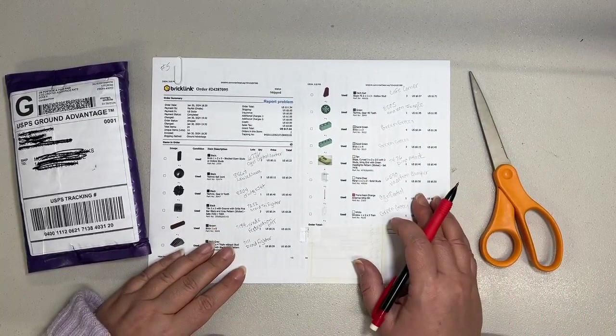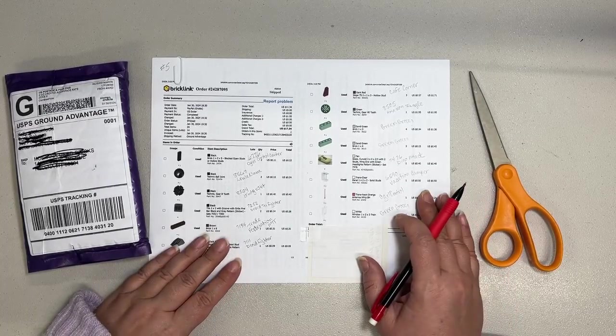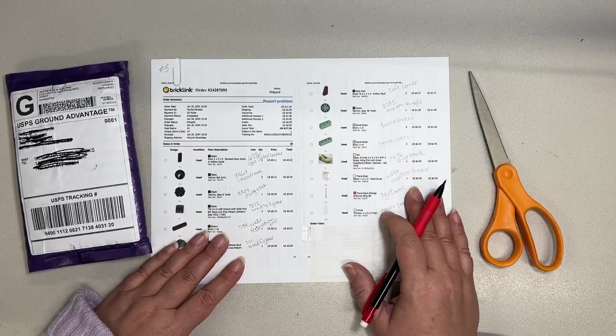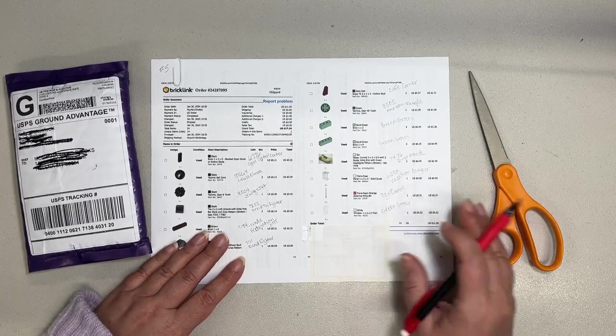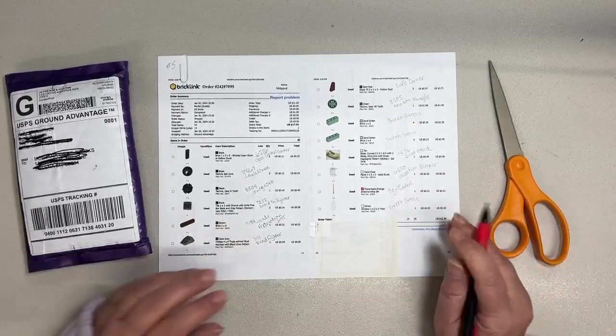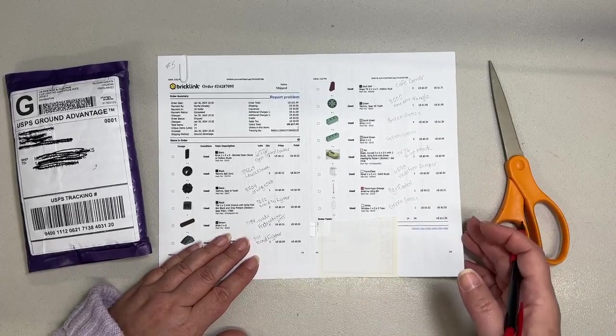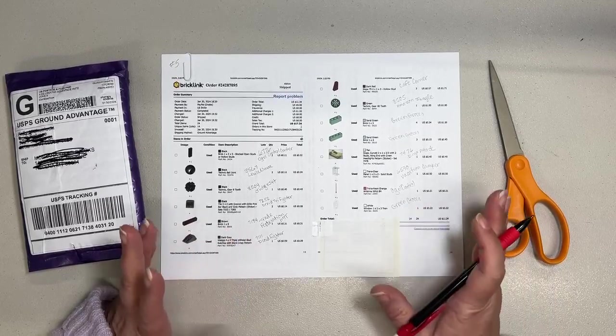Just more parts for some of the sets that I'm trying to get sold on eBay, and of course a couple for the two sets I'm constantly buying parts for. So this order came from Brick Salvage in Indiana, and it was a small order.